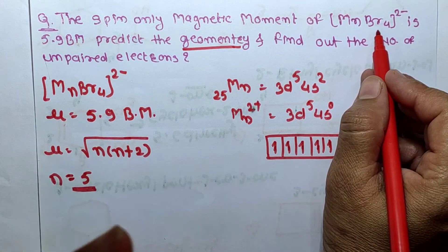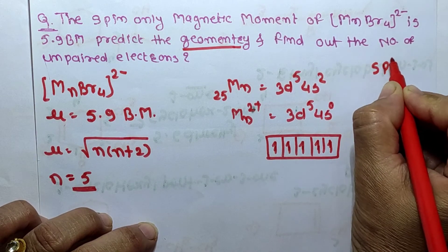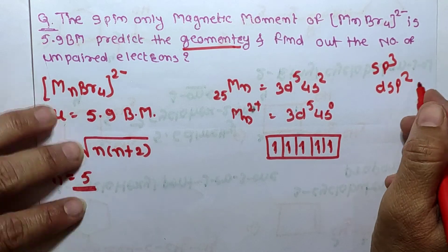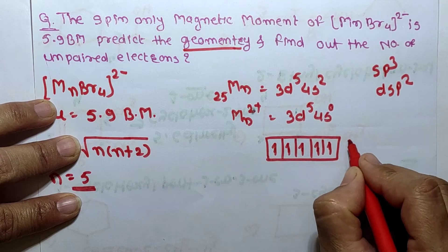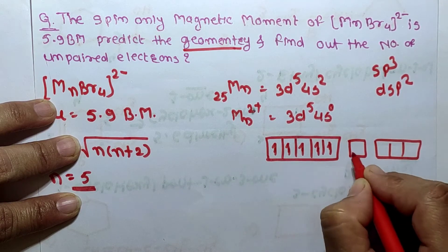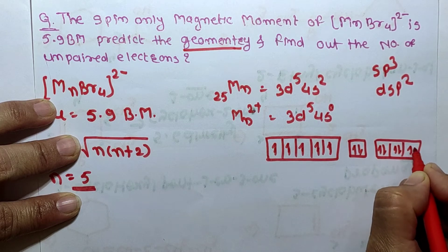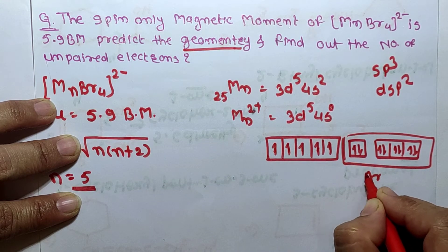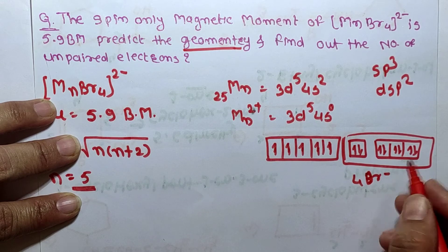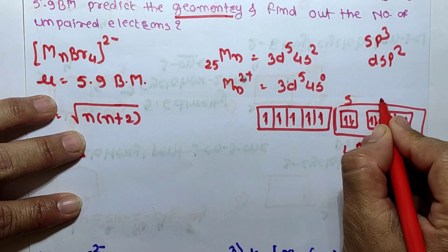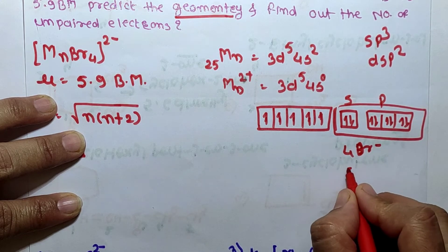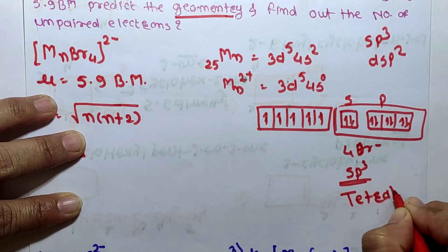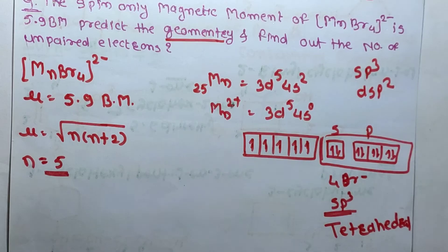Now we need to find the geometry. There are 4 ligands, so coordination number is 4. The geometry is either tetrahedral with sp³ hybridization or square planar with dsp² hybridization. Since the d orbitals cannot take part, s and p orbitals take part in bonding. The 4 Br⁻ electrons fill 1s and 3p orbitals, so hybridization is sp³ and geometry is tetrahedral.